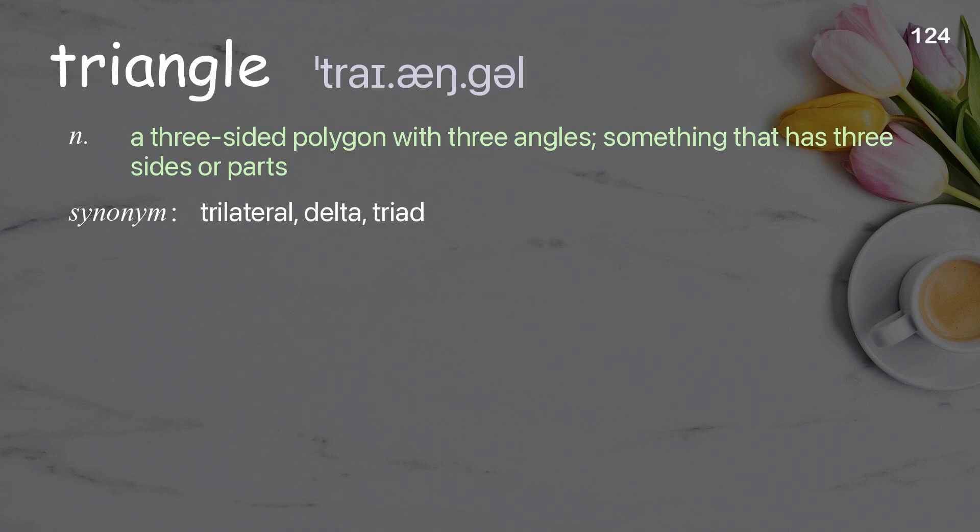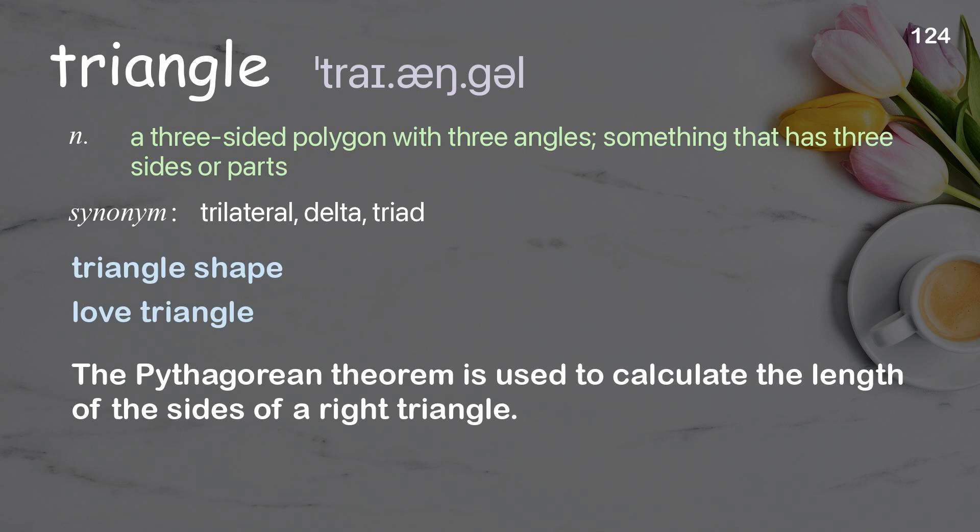Triangle: A three-sided polygon with three angles; something that has three sides or parts. Examples: Triangle shape, Love triangle. The Pythagorean theorem is used to calculate the length of the sides of a right triangle.